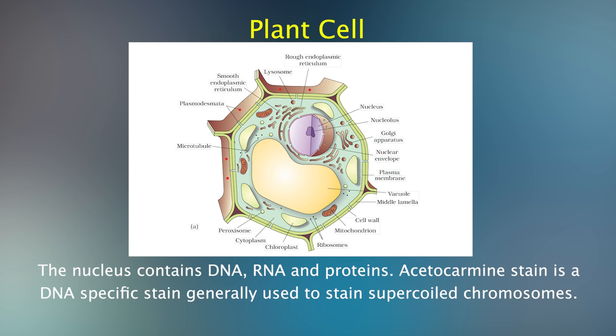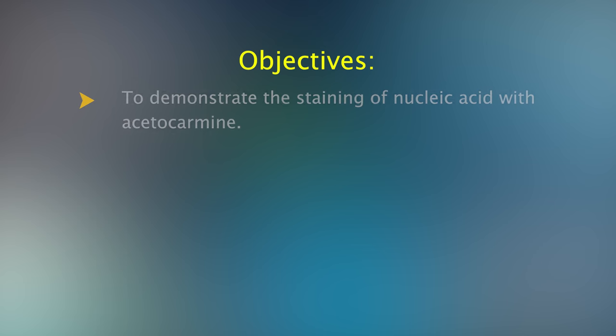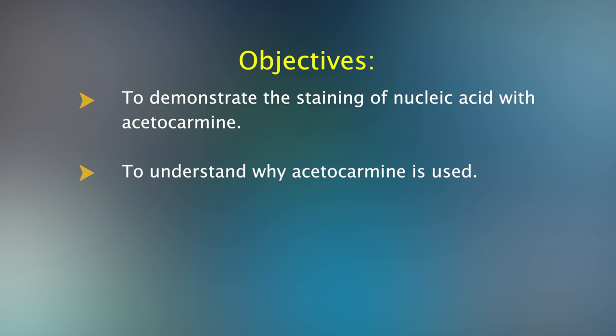Acetocarmine stain is a DNA specific stain generally used to stain supercoiled chromosomes. The objectives of this session are to demonstrate the staining of nucleic acid with acetocarmine, to understand why acetocarmine is used, and to observe the morphology of onion leaf cell.